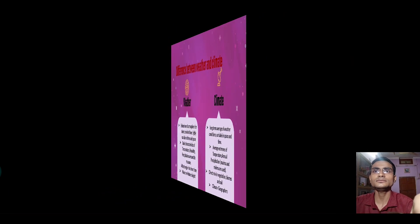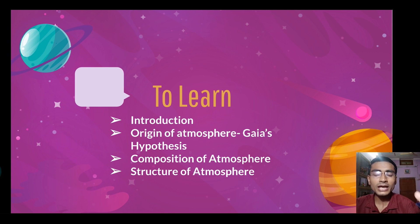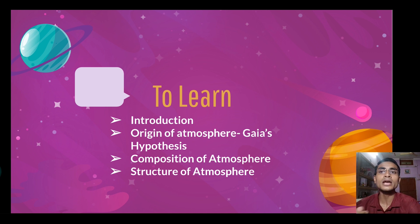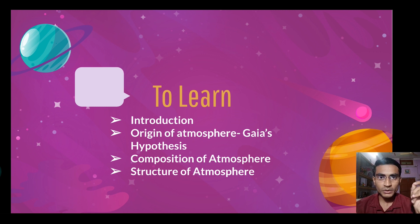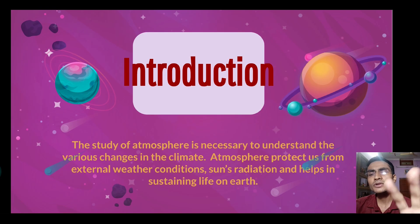The main 3-4 concepts in this chapter are: origin of atmosphere, the Gaia hypothesis, composition of atmosphere, and structure of atmosphere. Just as a pen has its own composition and structure — say, a cylindrical shape — similarly, atmosphere has its own composition and structure.